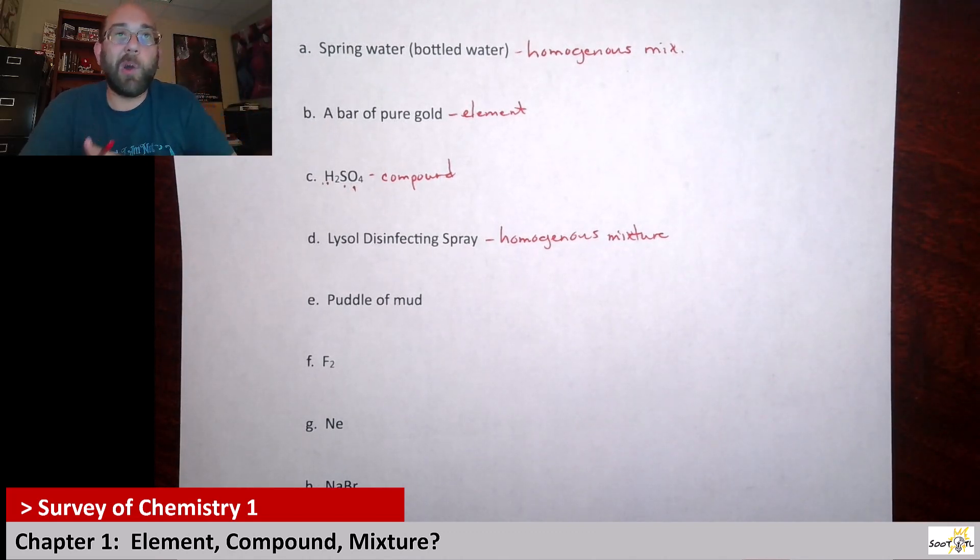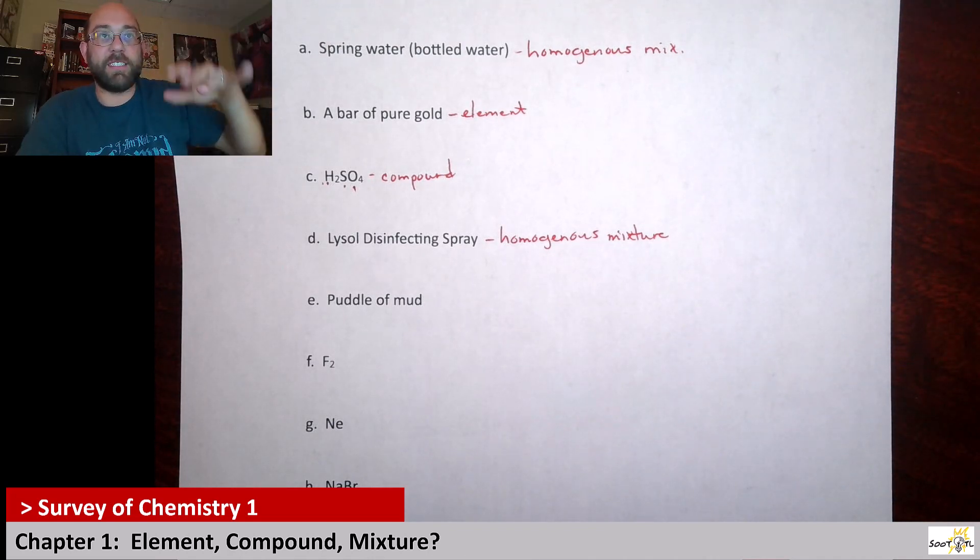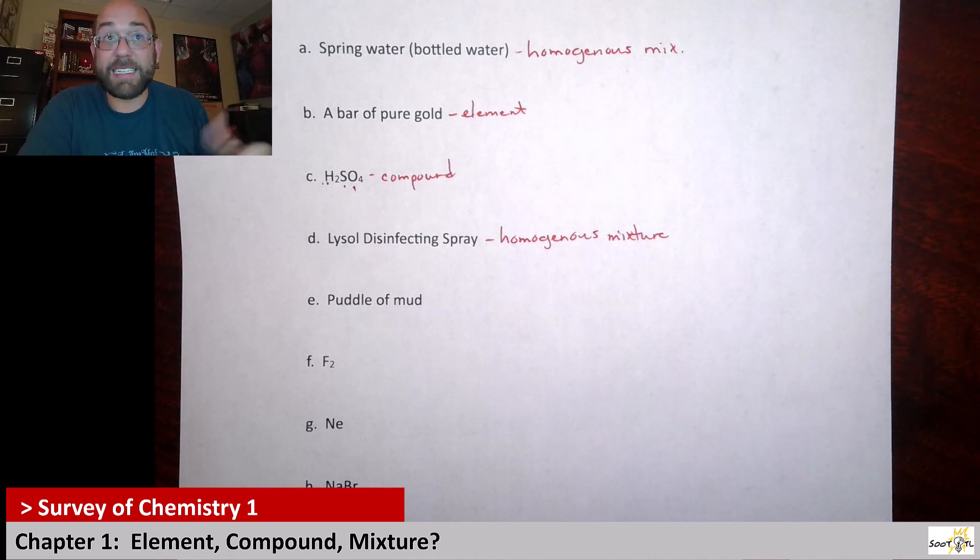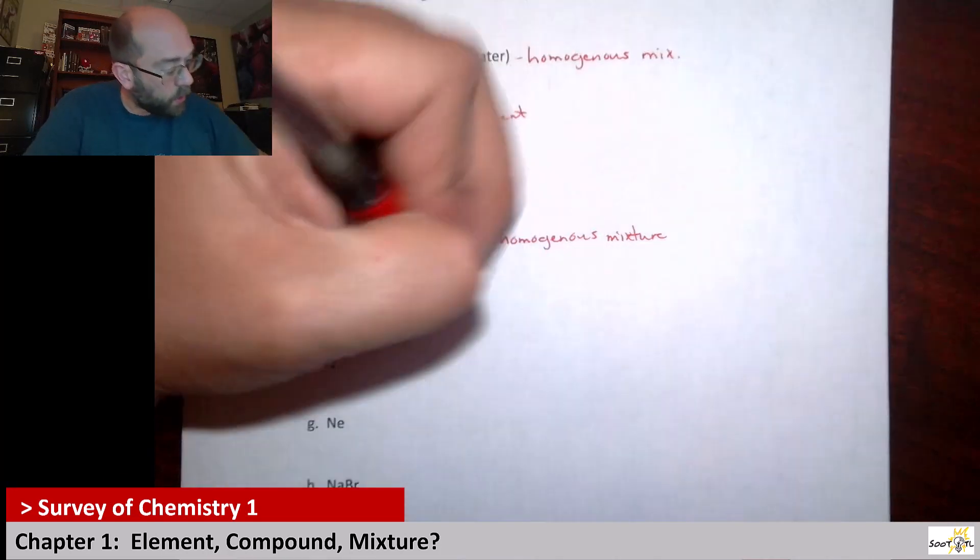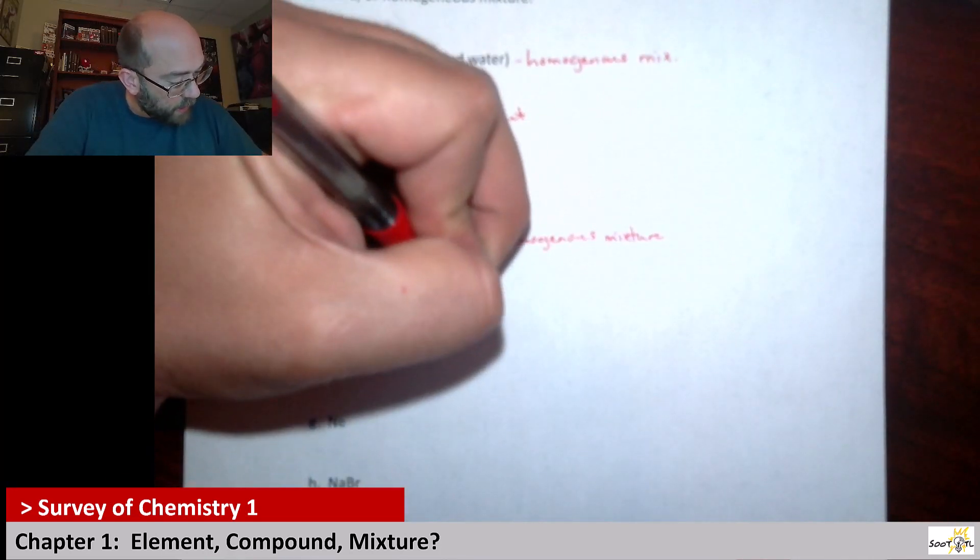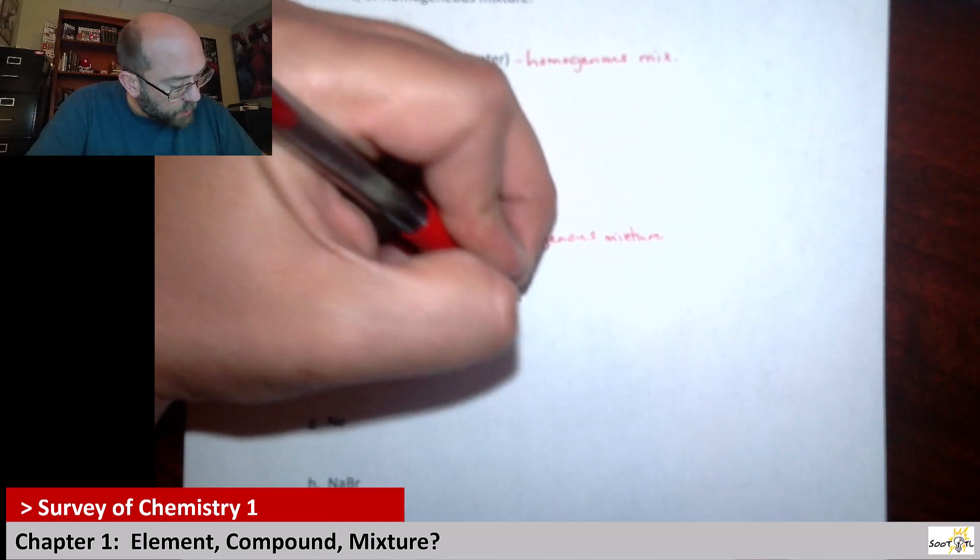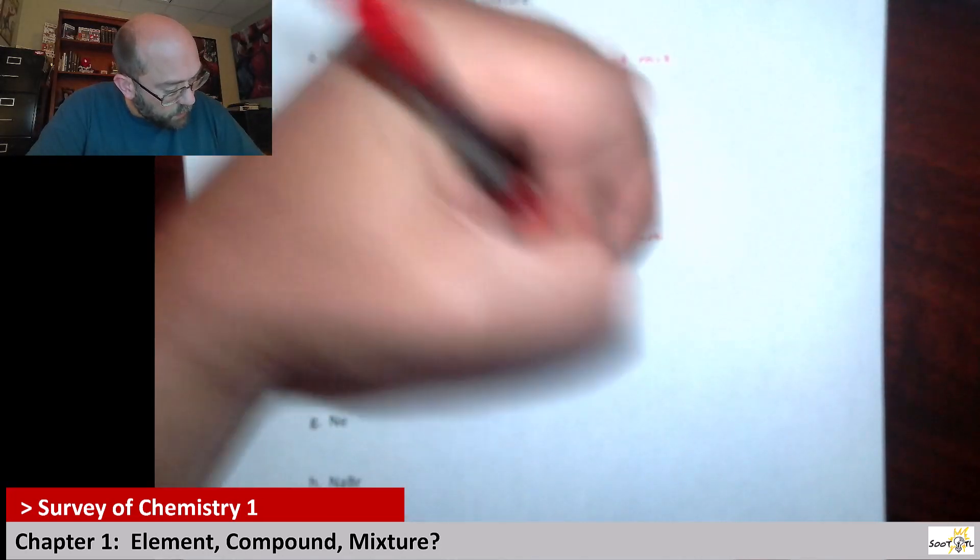And then when you walk away and you don't disturb that puddle, what happens? All that dirt settles. So to me, I think of the puddle of mud as in fact a heterogeneous mixture. Because those dirt particles can settle back down. So I would consider this a heterogeneous mixture.